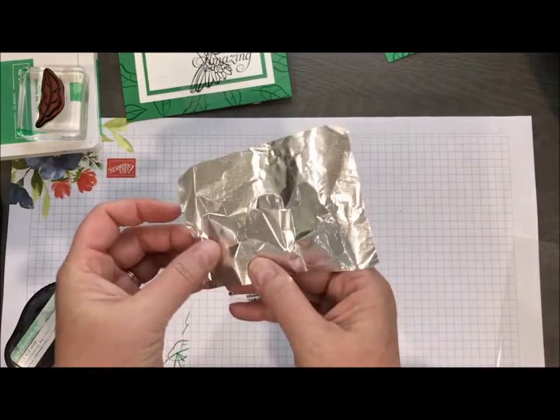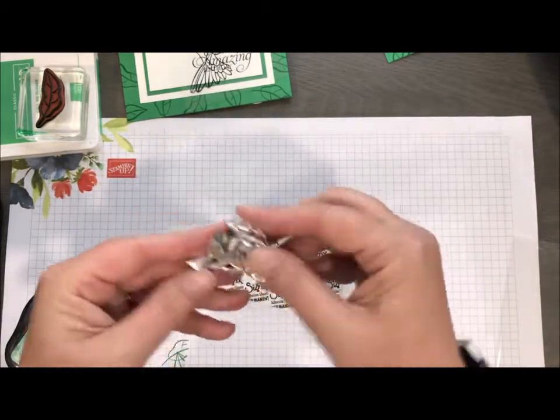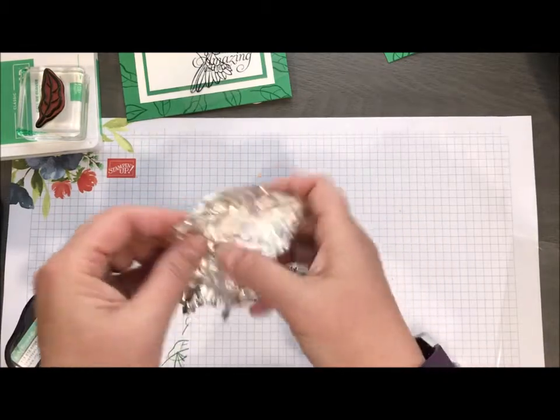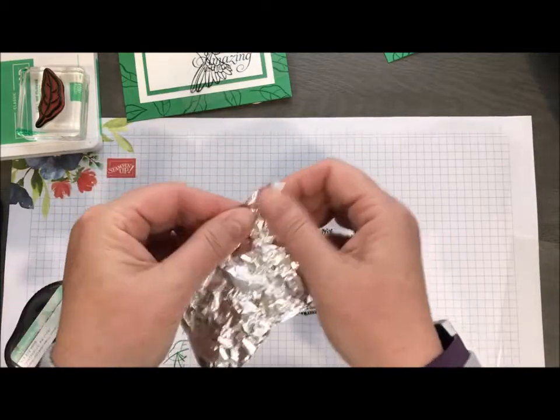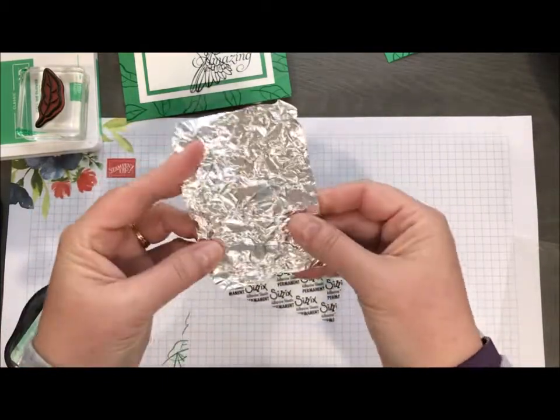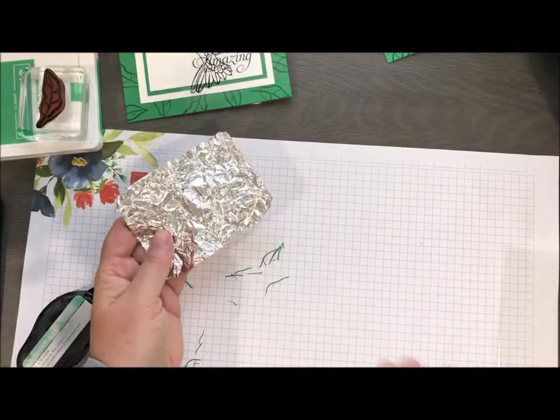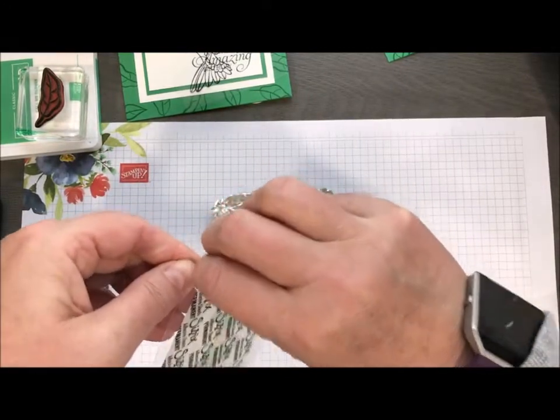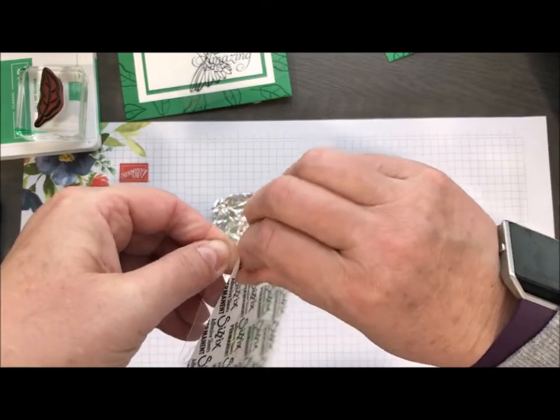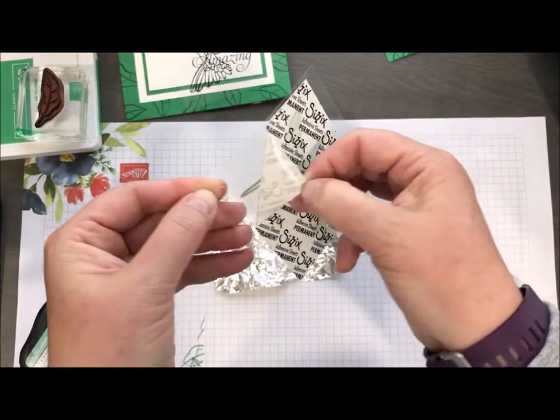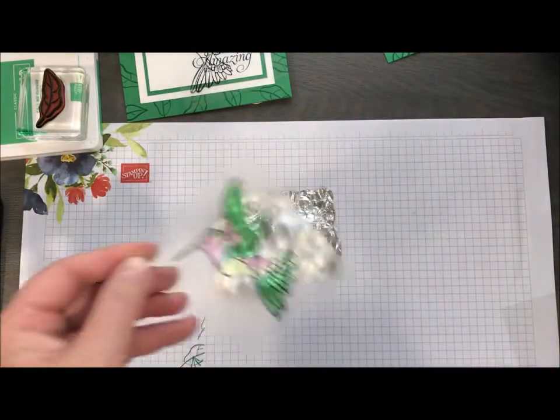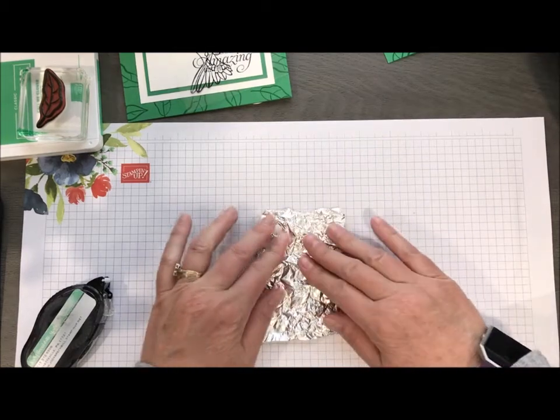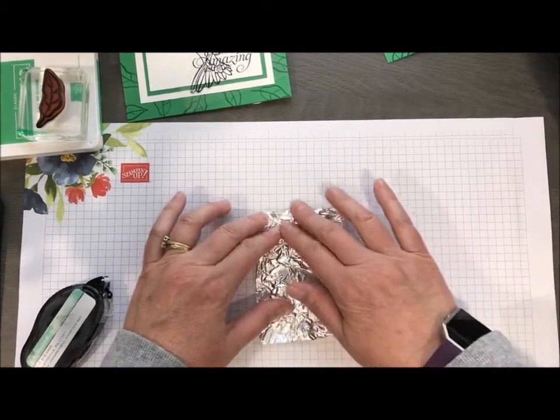And take a piece of just regular old aluminum foil. Doesn't matter what kind, like heavy duty or regular. Just crumple it up. Doesn't have to be real tight because you need to uncrumple. There is a shiny side and there is a dull side. I like to use the shiny side. So now you're going to peel the backing off of your adhesive sheet. Lay the shiny side of aluminum foil down and just press that onto your Hummingbird.